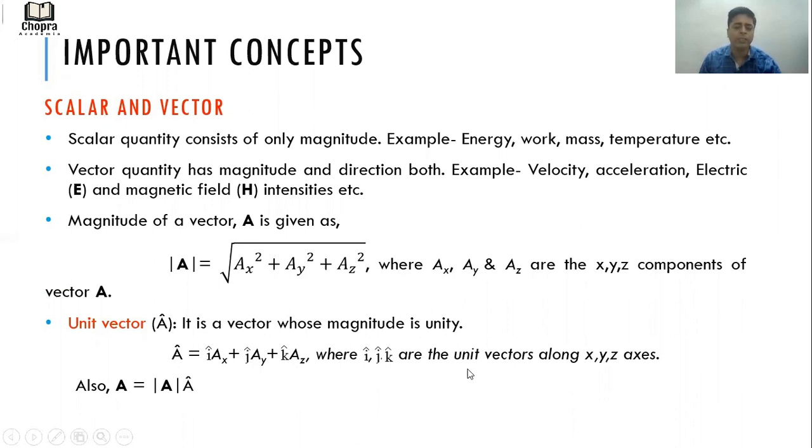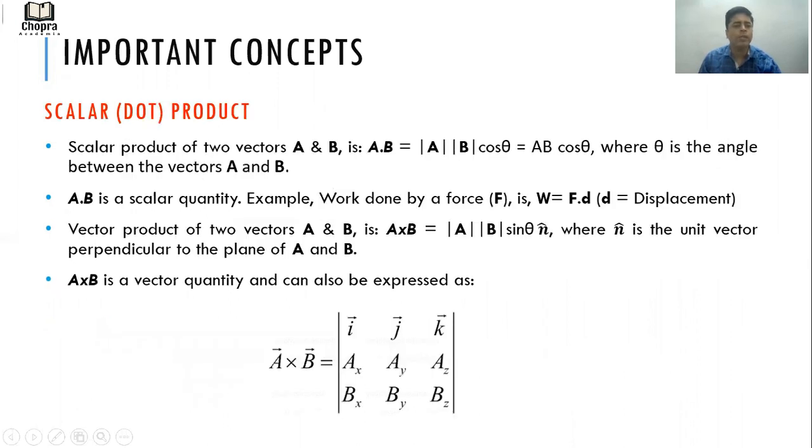What is a scalar product or the dot product? Scalar product of two vectors A and B is A·B = |A||B|cos θ, where θ is the angle between the vectors A and B. Important to understand, as the name suggests, A·B is a scalar quantity. So two vectors have been converted by this scalar product to a scalar quantity.